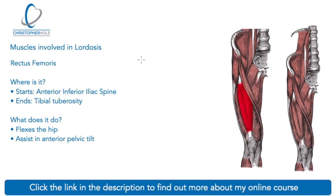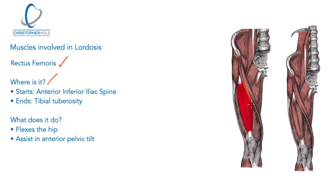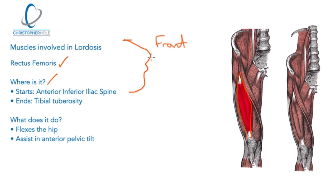The second muscle involved in the anterior pelvic tilt is the rectus femoris — the red muscle on the inside of the thigh. It starts on the anterior inferior iliac spine (AIIS), which is the front part of the pelvis. There are two bony landmarks at the front of the pelvis: the upper one is the anterior superior iliac spine (ASIS), and the lower one below is the AIIS. That's where the rectus femoris attaches.